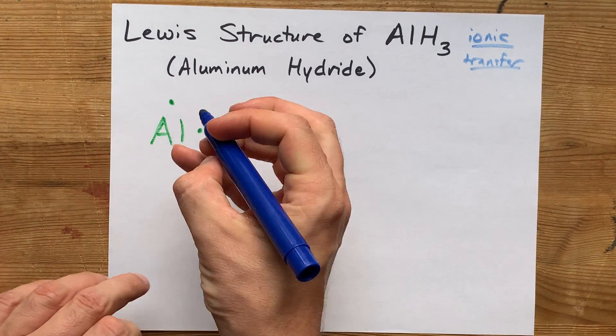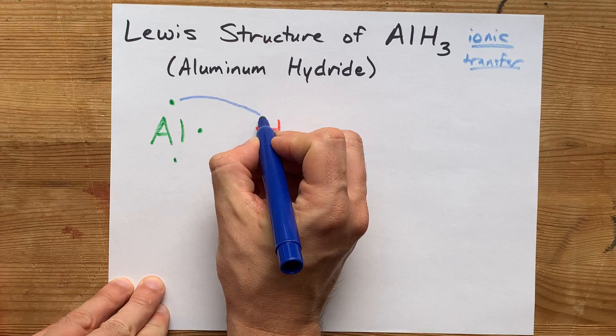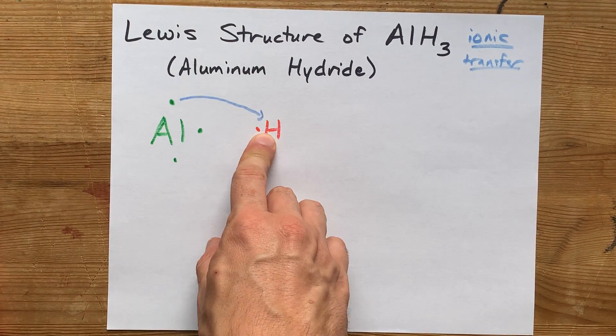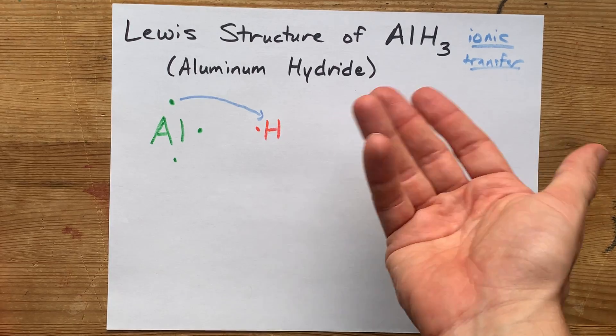So, aluminum will donate one electron to hydrogen, and that will give this hydrogen two electrons. It will have a full outer shell.